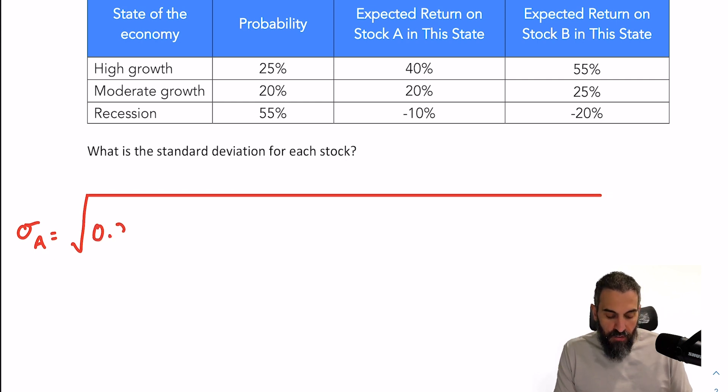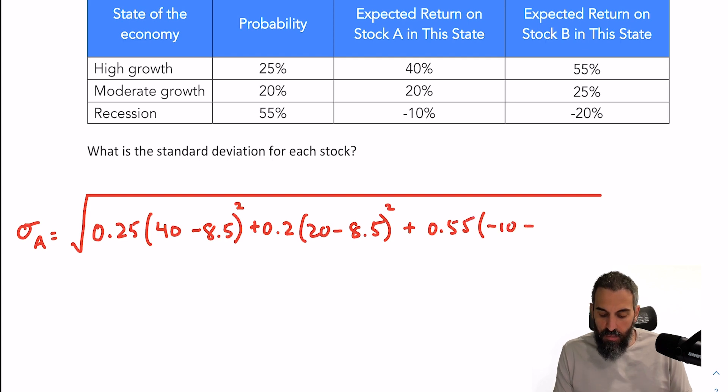The first probability of 25% multiplied by the return, so 40 minus the expected return, 8.5 squared. And now I'm going to repeat this for each state. The next probability is 20%, 20 minus the expected squared, and 55% probability, negative 10 minus 8.5 squared.